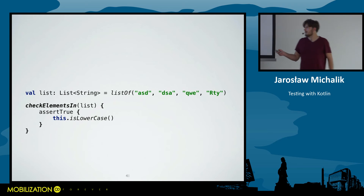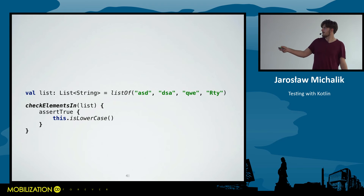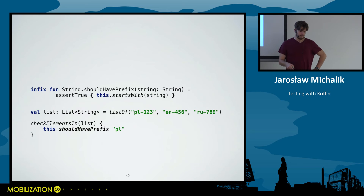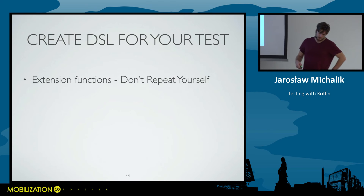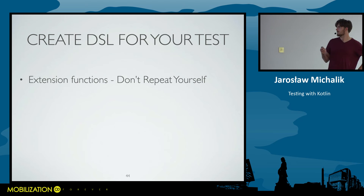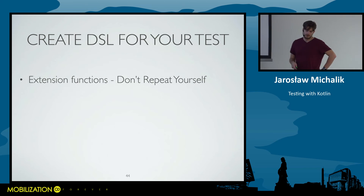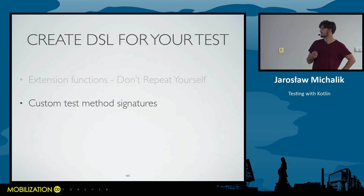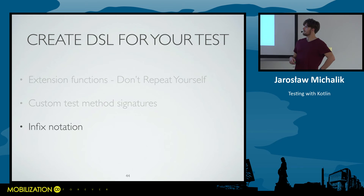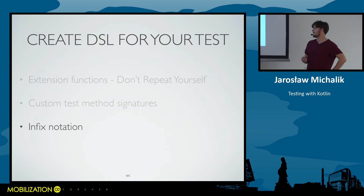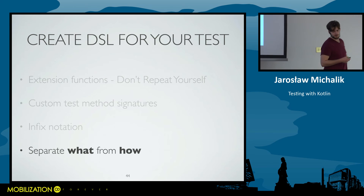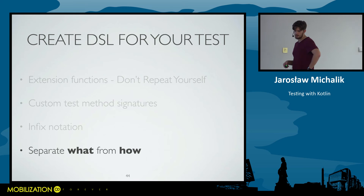And we can use it like this — we have some list, and for each element check if a given element is actually lowercase. We are creating these extensions because we want to keep it nice and clean and read like English, not some weird programming construct. With these DSLs and Spek, we can have custom method signatures with infix notation, which is an important part of creating DSL. And by writing DSLs, we are separating behavior from implementation.